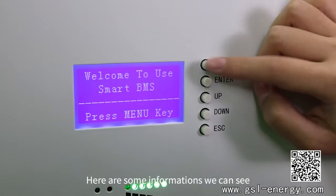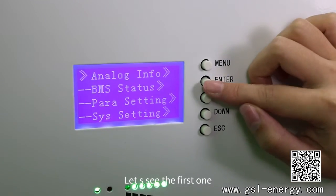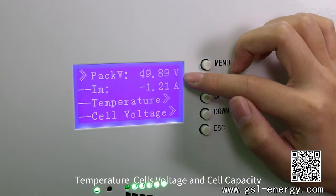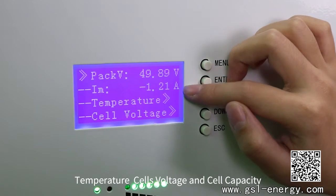Here is some information we can see. Let's see the first one. We can check the packed voltage, current, temperature, cell voltage, and cell capacity.